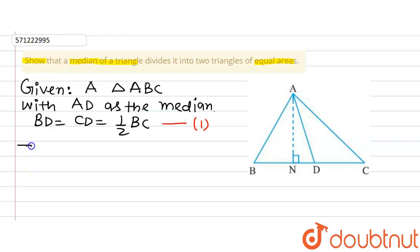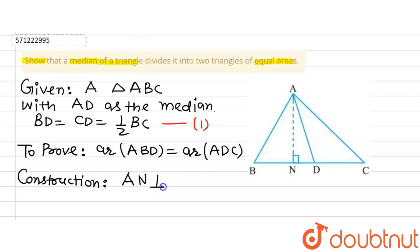To prove: we are required to prove that area of triangle ABD equals area of triangle ADC. Construction: we construct a perpendicular AN to BC.